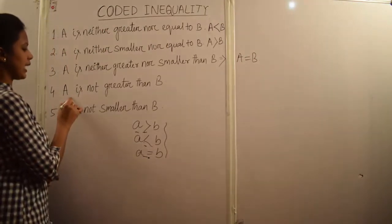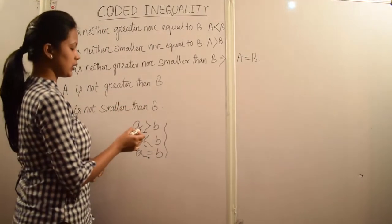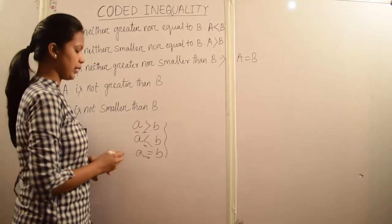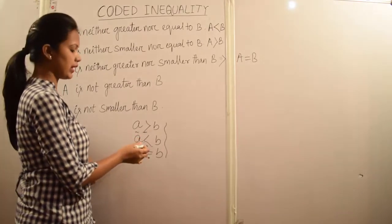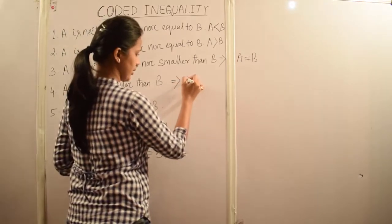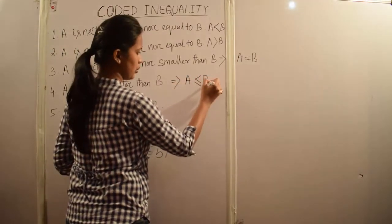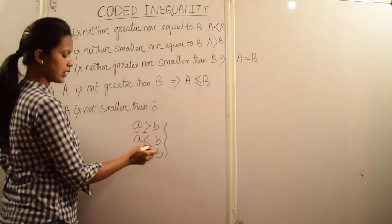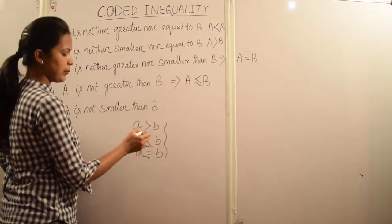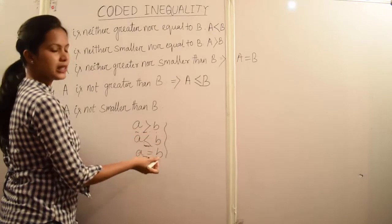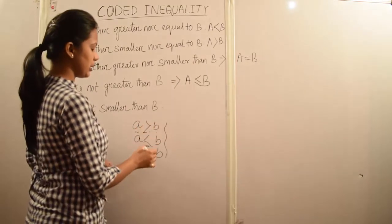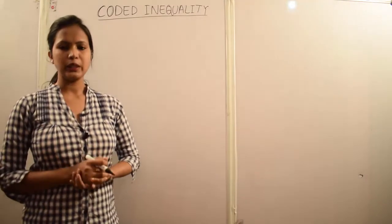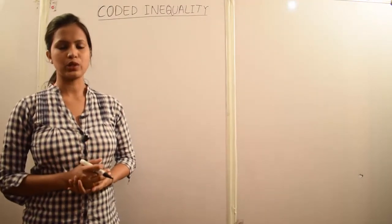The fourth type is: A is not greater than B. This means the remaining possibilities are A less than B or A equal to B. So by combining these two inequalities, we can write A is less than or equal to B. Similarly, A is not less than B means the only possibility left is it may be A is greater than B or A is equal to B, so by combining two inequalities we can write A is greater than or equal to B.